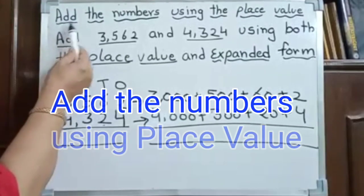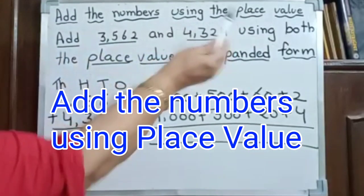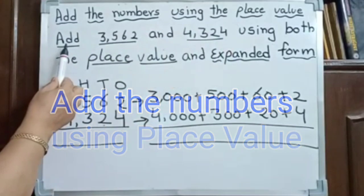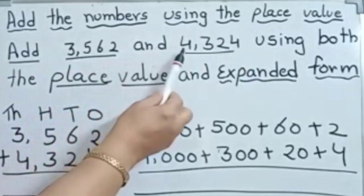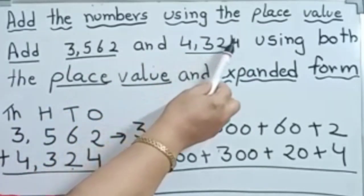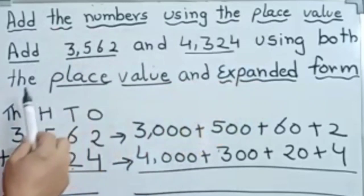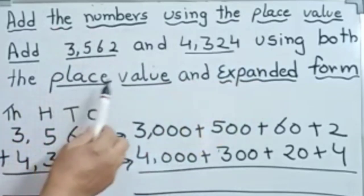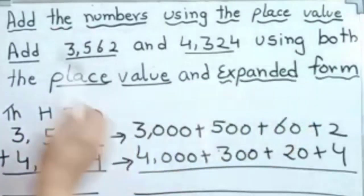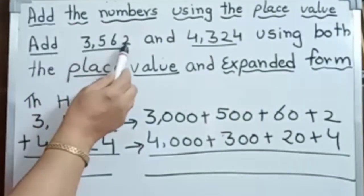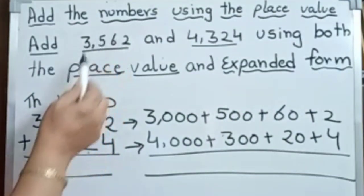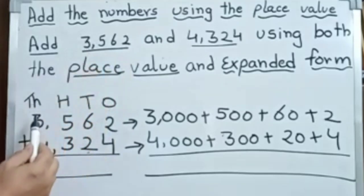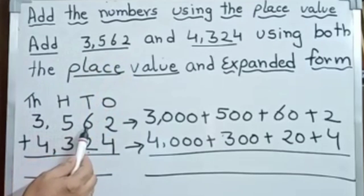Now add the numbers using the place value. Here we have 3,562 and 4,324. We have to add using both methods: place value and expanded form. Now see: 2 in the ones place, 6 in the tens place, 500 place, 3,000 place. Here we have 3,562.